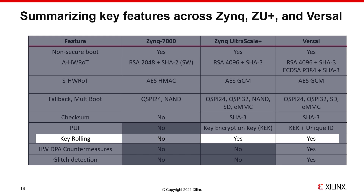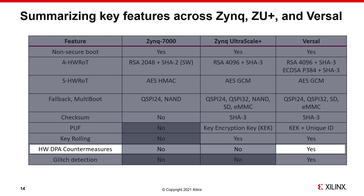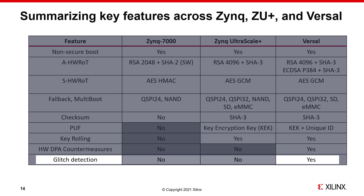Looking at boot features introduced in the Versal generation: in addition to the protocol-level DPA countermeasure of key rolling, the AES-GCM in Versal offers built-in leakage reduction. Additionally, the Versal boot ROM can detect and error out if a voltage glitch is detected.